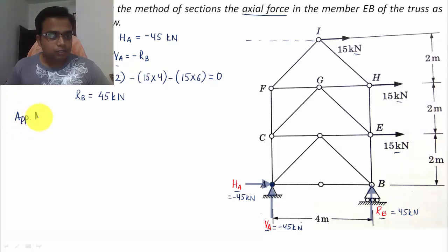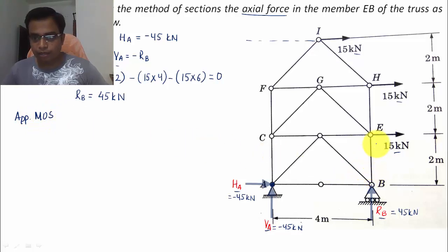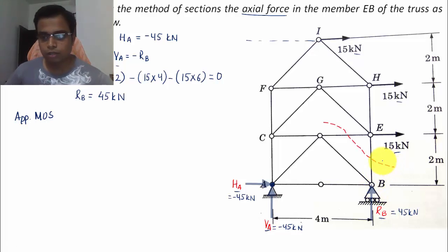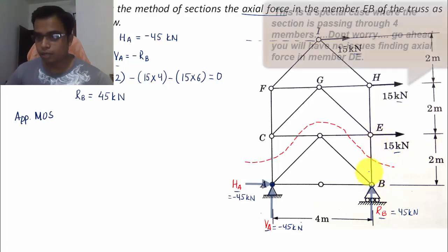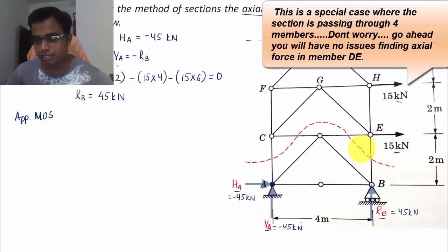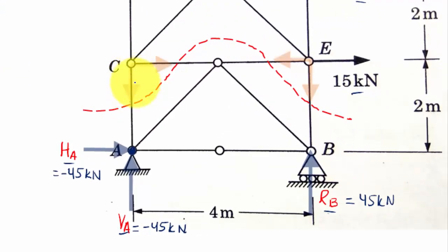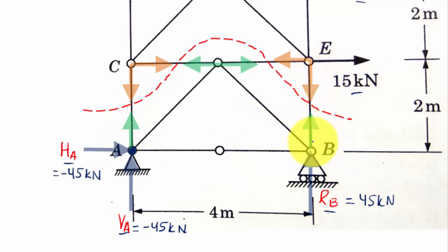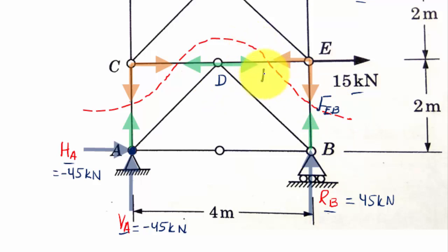Now we apply the method of sections to find the axial force in member EB. We make a section cut that passes through member EB. This section is approached by forces from both directions — from the top the forces are orange in color and from the bottom the forces are green. We label the unknown force in member EB as F_EB, and also identify F_DE, F_CD, and F_AC at the cut.